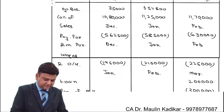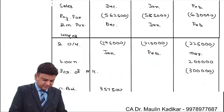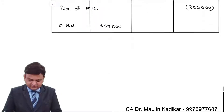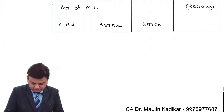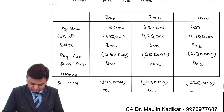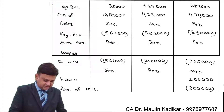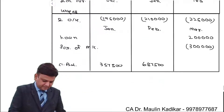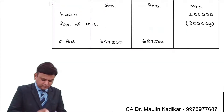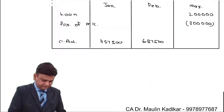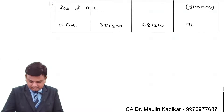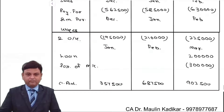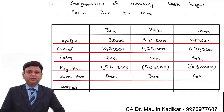For February: 3,57,500 plus 11,25,000 minus 5,85,000 minus 2,10,000. For March: the previous balance plus receipts, minus 6,30,000 minus 2,25,000 plus 2 lakhs loan minus 3 lakhs machinery, giving a closing balance of 9,35,000. That is the way the closing balance is calculated on a monthly basis.